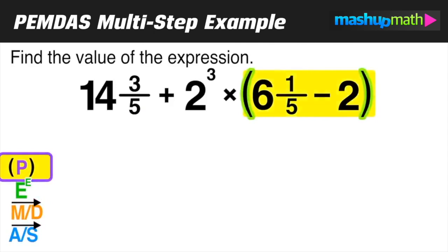As always, we're going to start with parentheses first. In this case, 6 1/5 minus 2, which has a difference of 4 1/5.